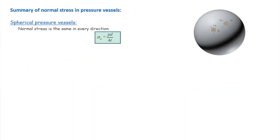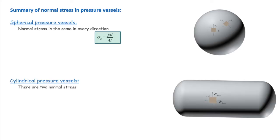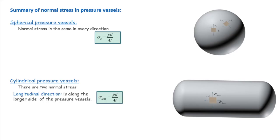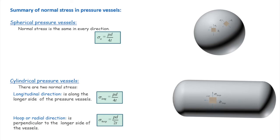To summarize: in spherical pressure vessels, stress is the same in every direction with magnitude pd divided by 4t. In cylindrical pressure vessels, the longitudinal stress is also pd divided by 4t, but the hoop stress is twice as large at pd divided by 2t.